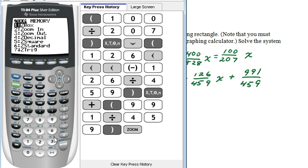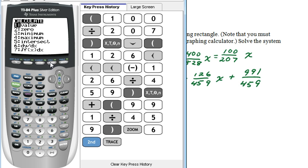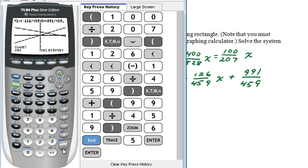Let's try zoom 6. We do 2nd trace for calc, 5 for intersect. Hit enter to select the first function. Hit enter to select the second function. Hit enter for the guess. And we're getting 2.85, 1.38.